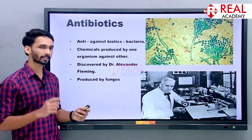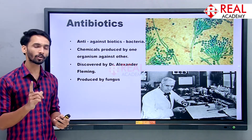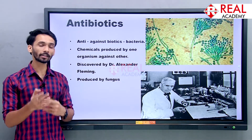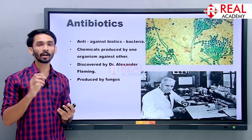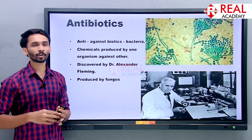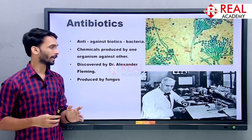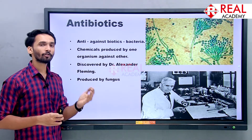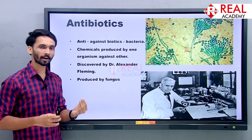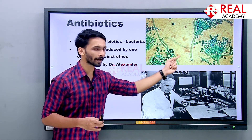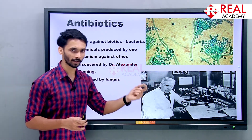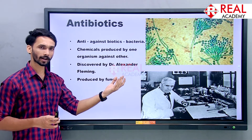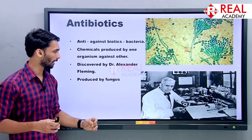The first antibiotic discovered in the world, in 1928, was Penicillin, which was made by a fungus called Penicillium. As you can see the Penicillium fungus here — that fungus is the first one.